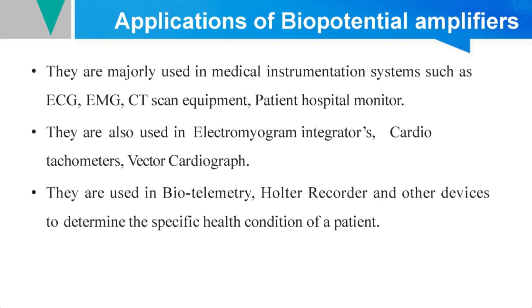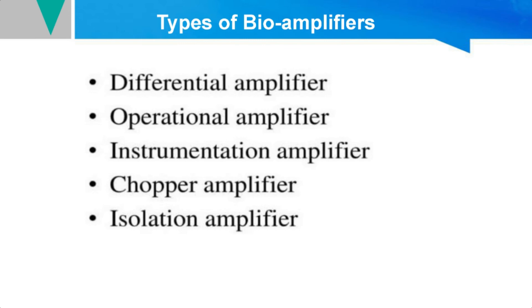The different types of biological amplifiers can be classified into five types: differential bioamplifier, operational amplifier, instrumentation amplifier, chopper amplifier, and isolation amplifier. These amplifiers will be discussed in detail in the next video. Thank you.